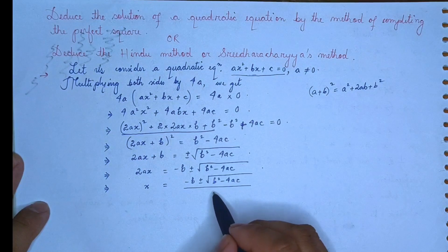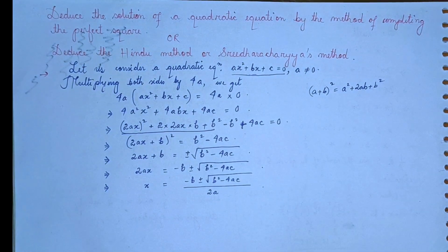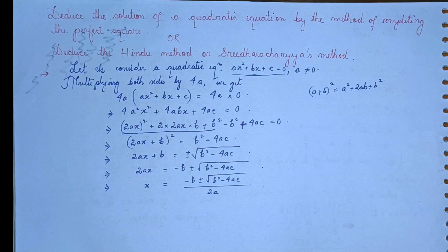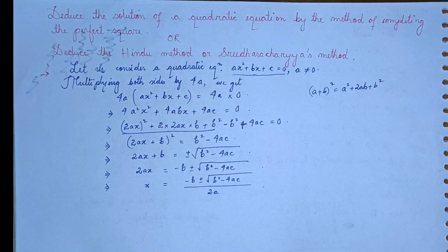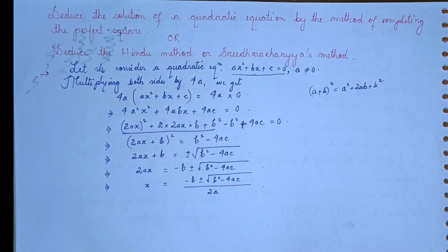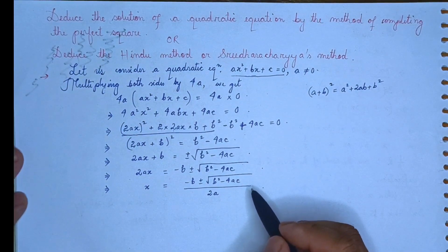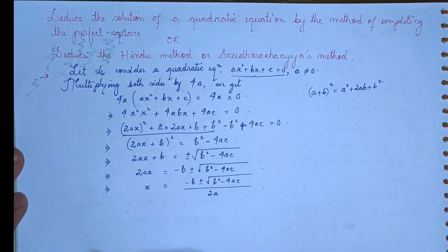Dividing both sides by twice a, we get the value of x. This gives us the solution of the quadratic equation, divided by twice a. This result is known as the Hindu method, or Sridharacharya method.